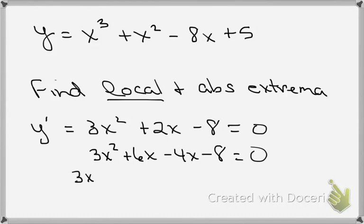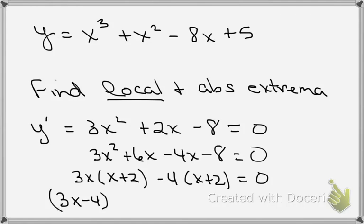Got a common factor of 3 and x that comes out leaves with x plus 2. In the second grouping I have a common factor of minus 4 that comes out leaves me with x plus 2 that's equal to 0, so this factors to 3x minus 4 times x plus 2 and that's equal to 0.